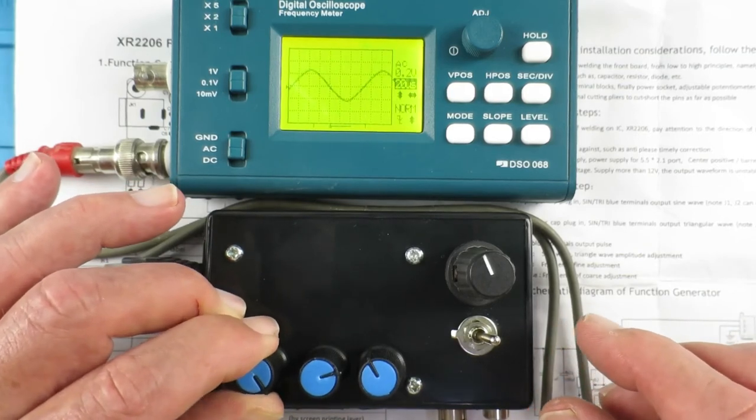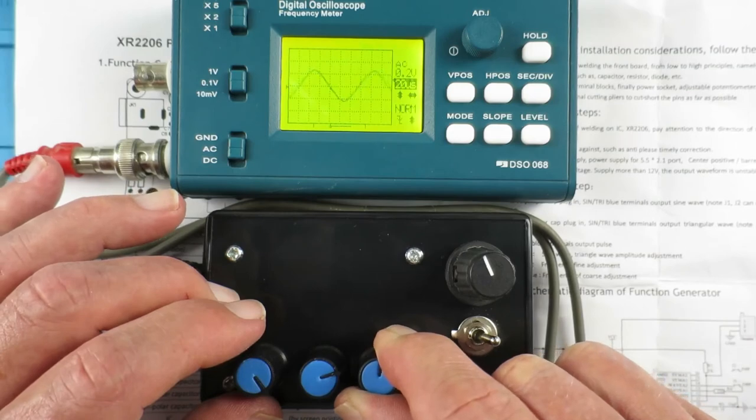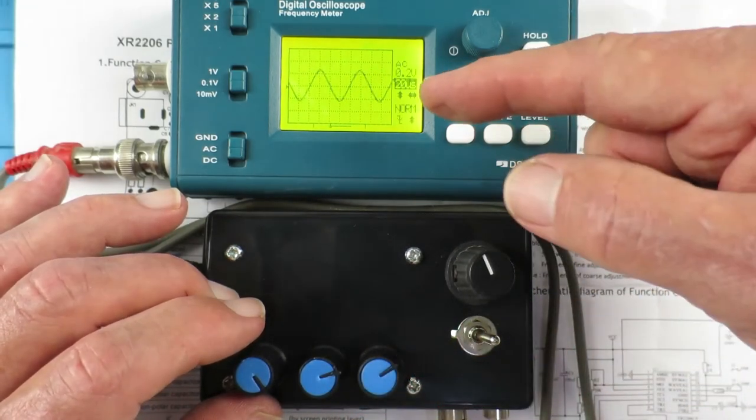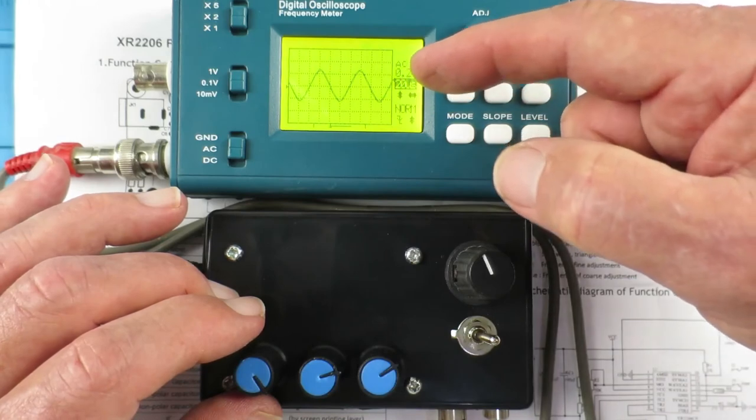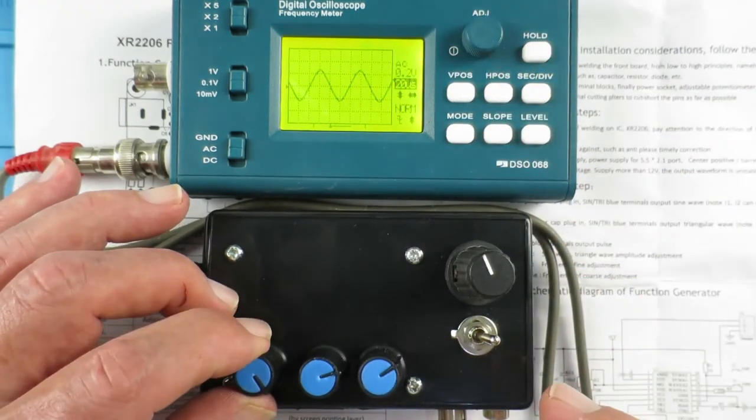This is on the minimum setting now. So this is 0.2 volts per division. So that gives us around about 0.5 volts peak to peak. So that's the minimum setting.